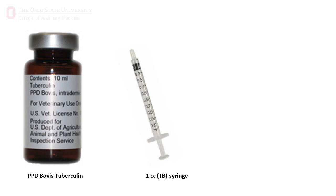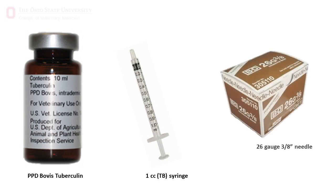Next, you will need a 1cc, also known as a TB syringe. And finally, you will need a 26 or 27 gauge, short — around three-eighths of an inch — needle.